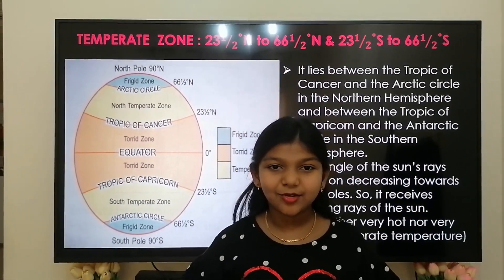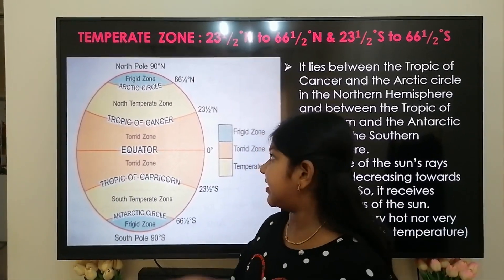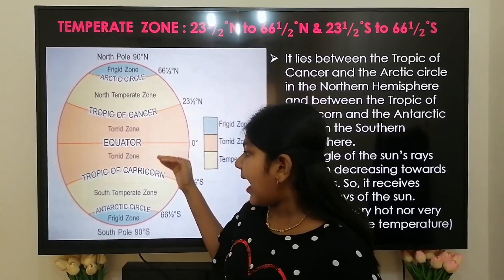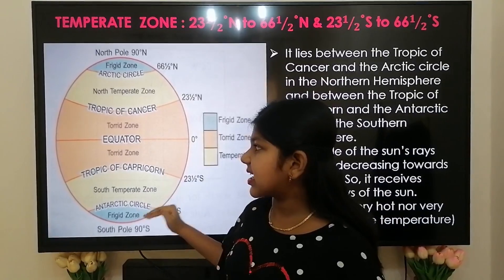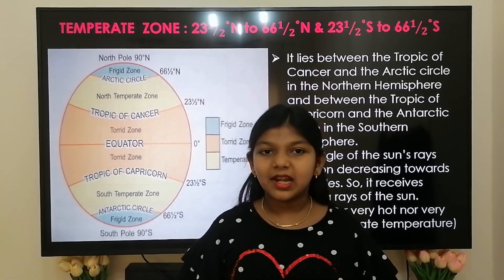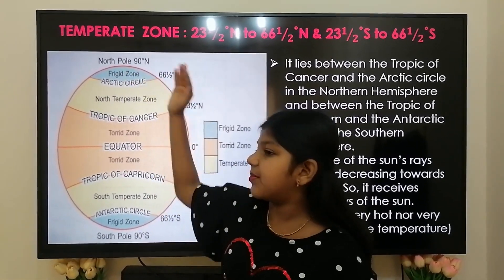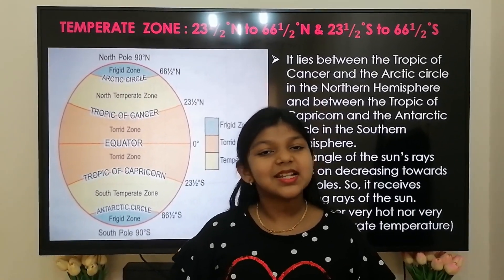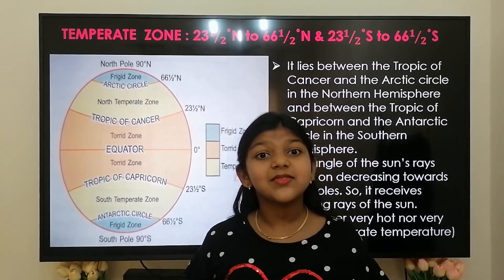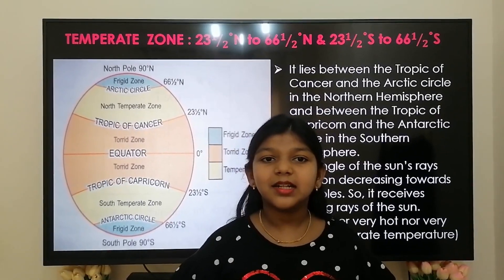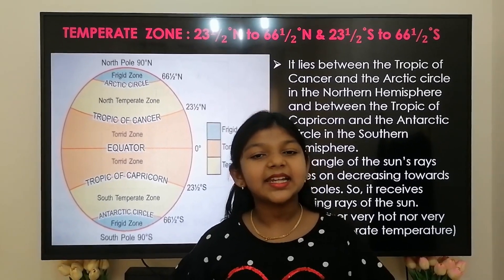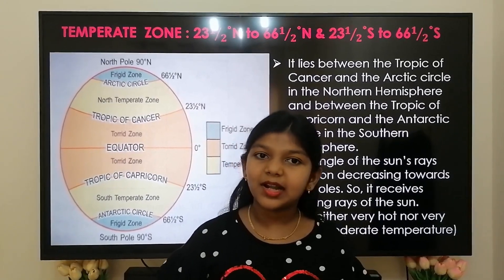Temperate zone lies between the Tropic of Cancer and the Arctic Circle in the northern hemisphere, and the Tropic of Capricorn and the Antarctic Circle in the southern hemisphere. The angle of the sun rays goes on decreasing towards the pole, so it receives slanting rays of the sun. As it receives slanting rays, the temperature is neither too hot nor too cold — we can say it receives a moderate climate.